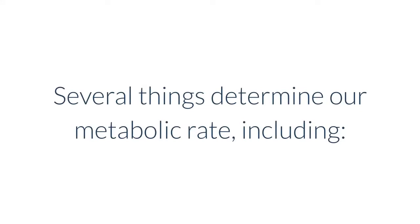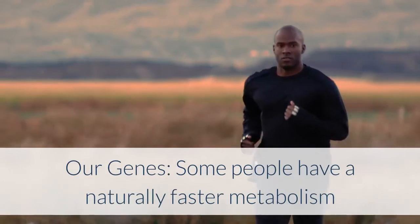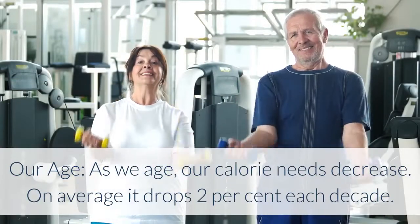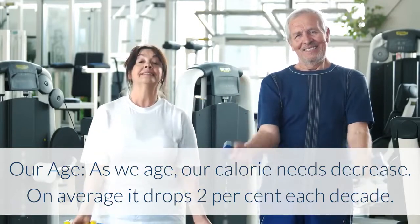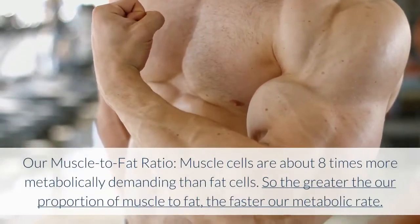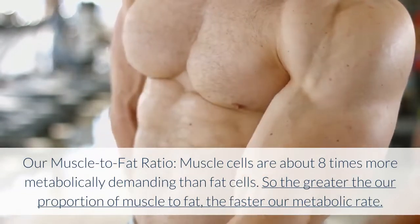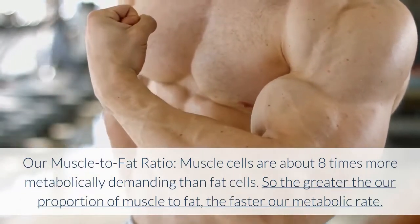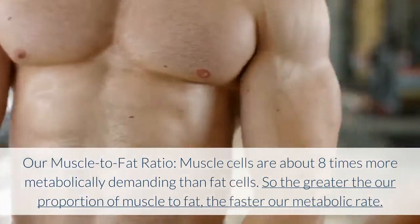Several things determine our metabolic rate. Our genes — some people have a naturally faster metabolism. Our age — as we age, our calorie needs decrease; on average it drops 2% each decade. Our muscle to fat ratio — muscle cells are about 8 times more metabolically demanding than fat cells, so the greater our proportion of muscle to fat, the faster our metabolic rate.